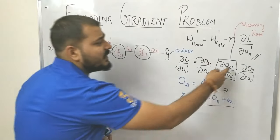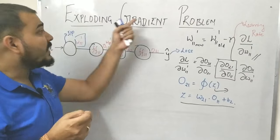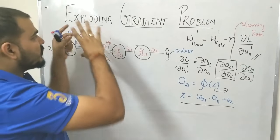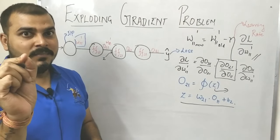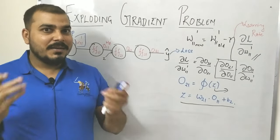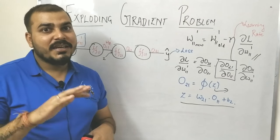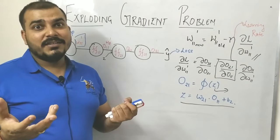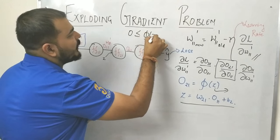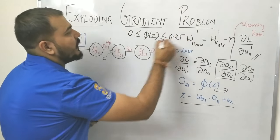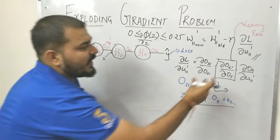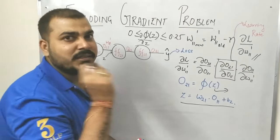Let me focus on this particular derivative to show you how the exploding gradient problem occurs — and it does not just happen because of the sigmoid function. The main reason the exploding gradient problem happens is because of the weights. You know that a sigmoid activation function transforms values between 0 and 1, and the derivative of a sigmoid function ranges between 0 and 0.25. Let's take that value and compute it.